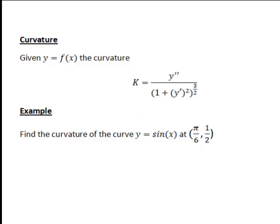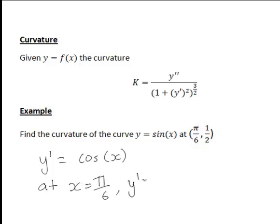For this example we start by working out dy/dx, or y dashed. If y is sin x, the first derivative of y with respect to x is cos x. Since we're interested in the point (π/6, 1/2), at x equals π/6, y dashed equals cos(π/6), which is equal to √3/2.